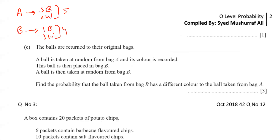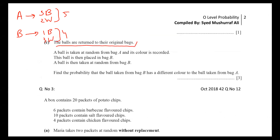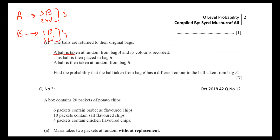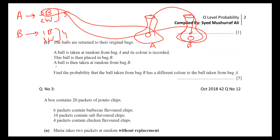Part (c): The balls are returned to their original bags once again — reset to the starting position. A ball is taken randomly from Bag A, its color is recorded, and then this ball is placed into Bag B. So Bag B now has five balls instead of four. If the ball shifted is black, the black count in Bag B increases; if white, the white count increases.